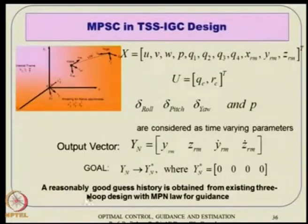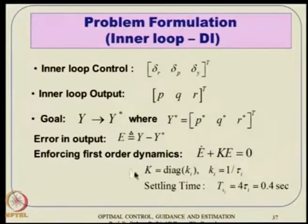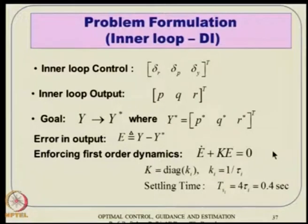For the inner loop control, we have fin deflections. The formulation is that y should go to y_star in the dynamic inversion sense. We define an error and enforce error dynamics where k is a diagonal matrix with diagonal entries being 1/tau. The settling time is assumed as 0.4 seconds — less than half a second for the inner loop. So the outer loop can close in something like three to four times that, meaning around one and a half to two seconds — any time-to-go more than two seconds we will be able to handle.